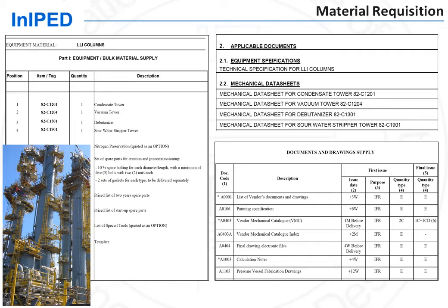For individual equipment such as pressure vessels, the information shown on the mechanical data sheet combined with the specified design and construction code is sufficient to fully define the technical requirements, and no other documents need to be prepared. However, for equipment with an extended scope of supply, such as a turbo compressor set, and for package units, a specification needs to be written to precisely define the scope of supply, services, and all technical requirements.